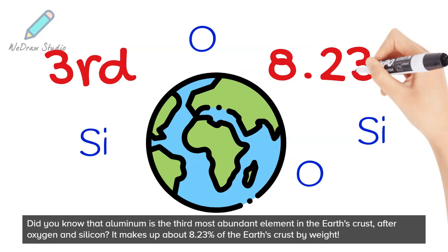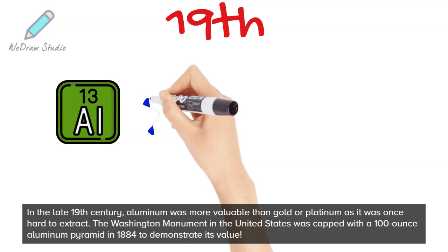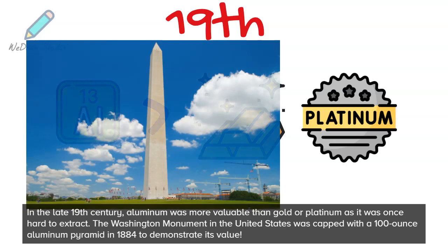In the late 19th century, Aluminum was more valuable than gold or platinum, as it was once hard to extract. The Washington Monument in the United States was capped with a 100-ounce aluminum pyramid in 1884, to demonstrate its value.